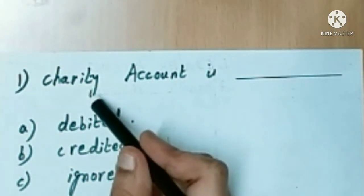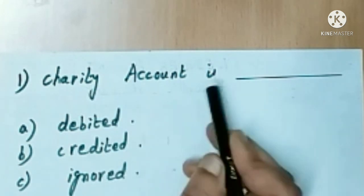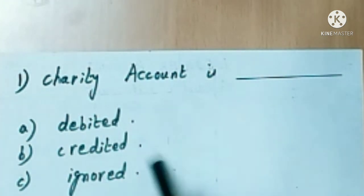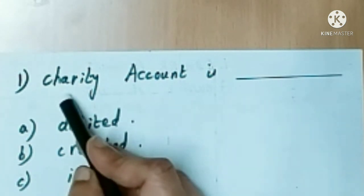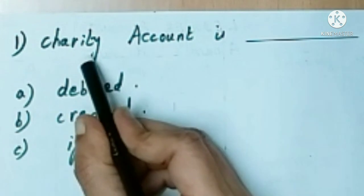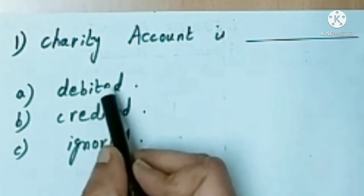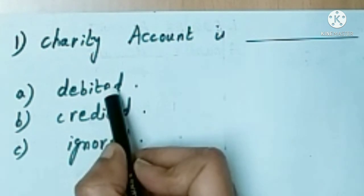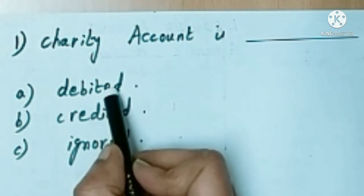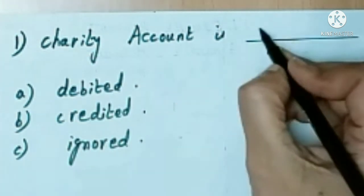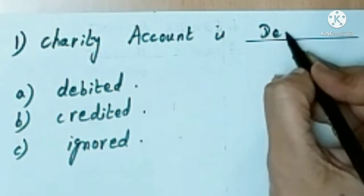Let's discuss this question: charity account is — debited, credited, or ignored? We already know that charity account is debited. It is like an expense, so according to the nominal account rule — debit all expenses and losses — charity account is debited. The right answer is option A.